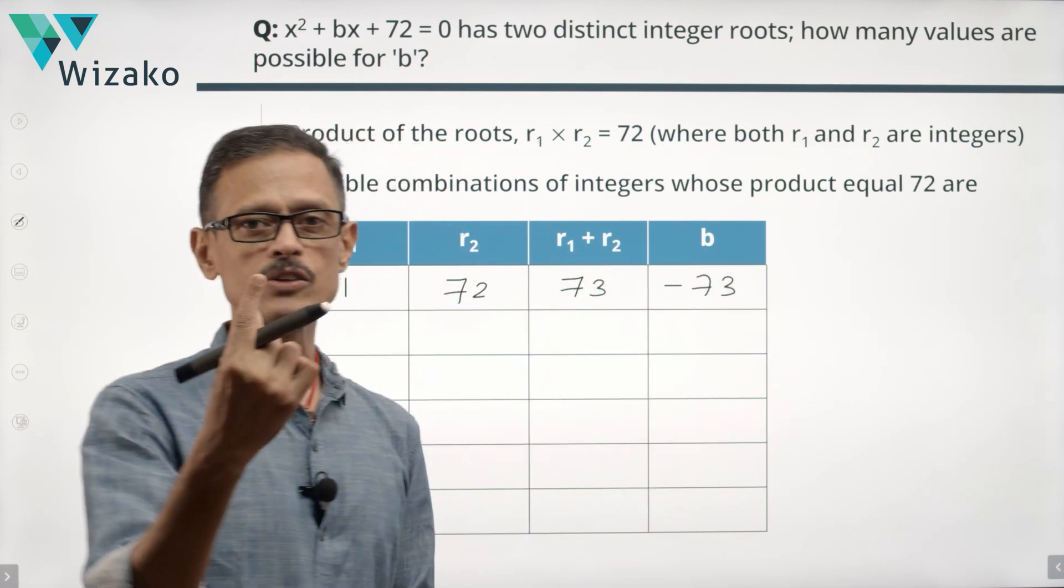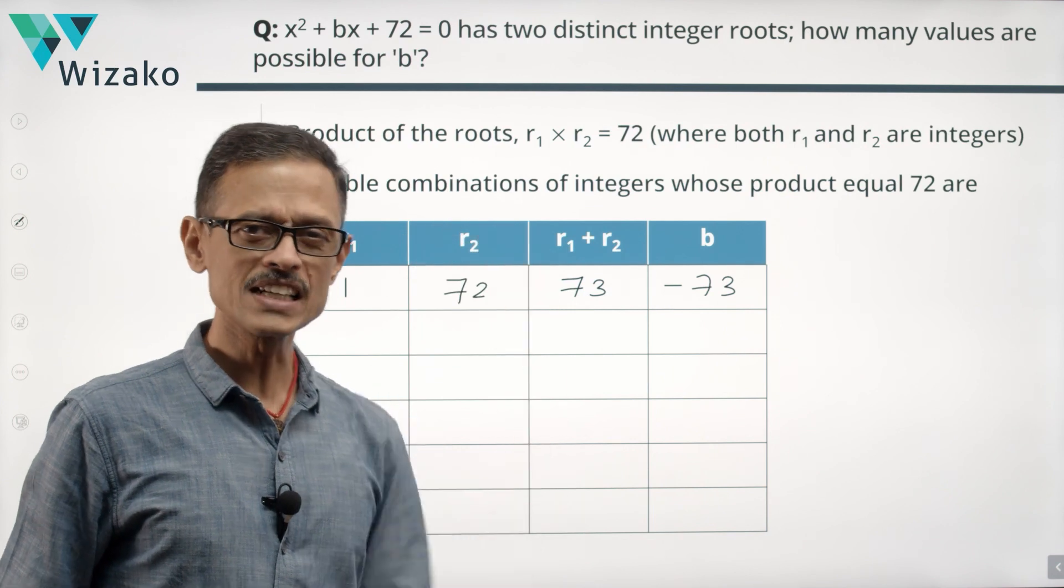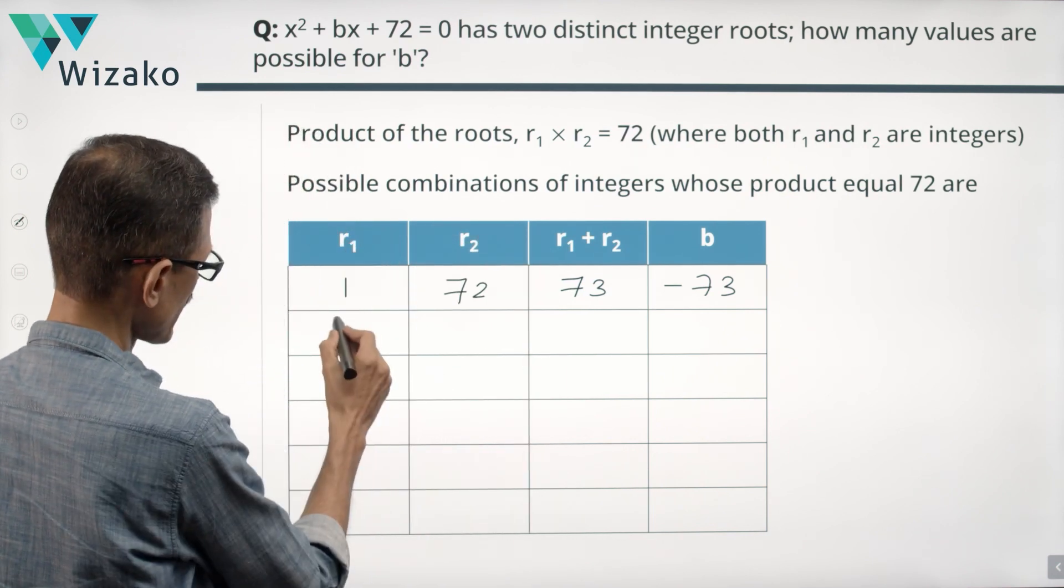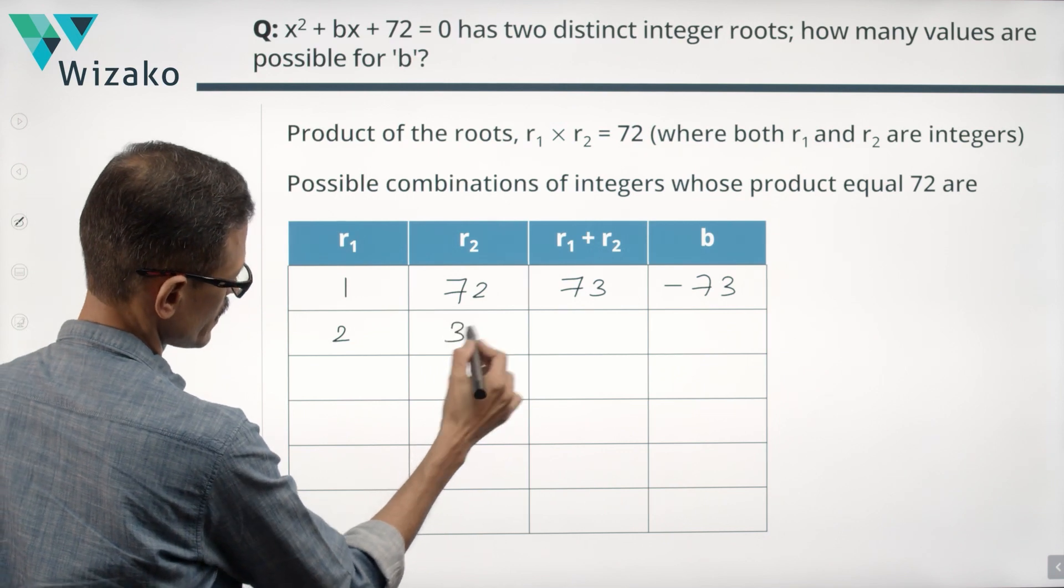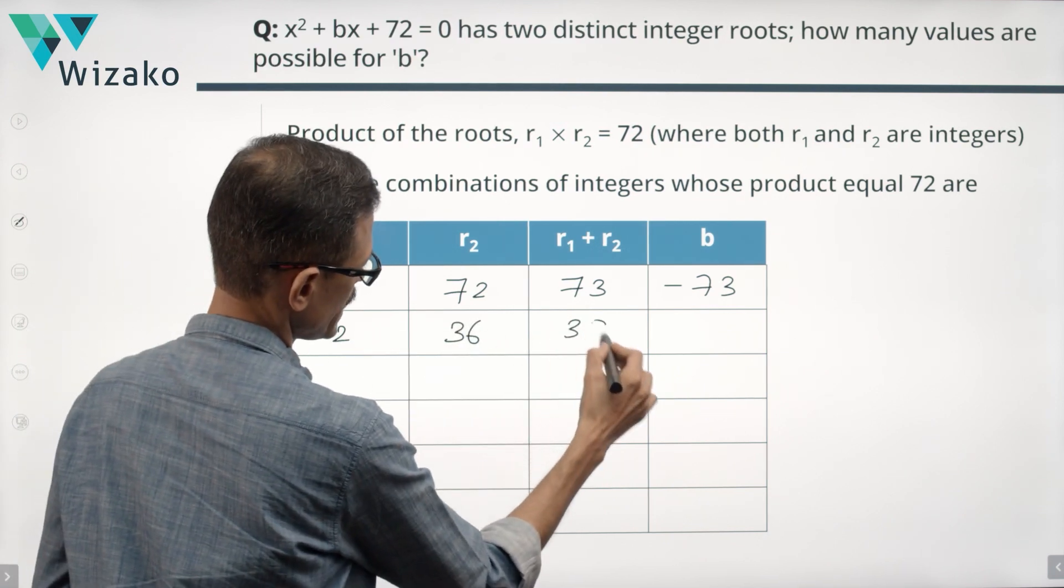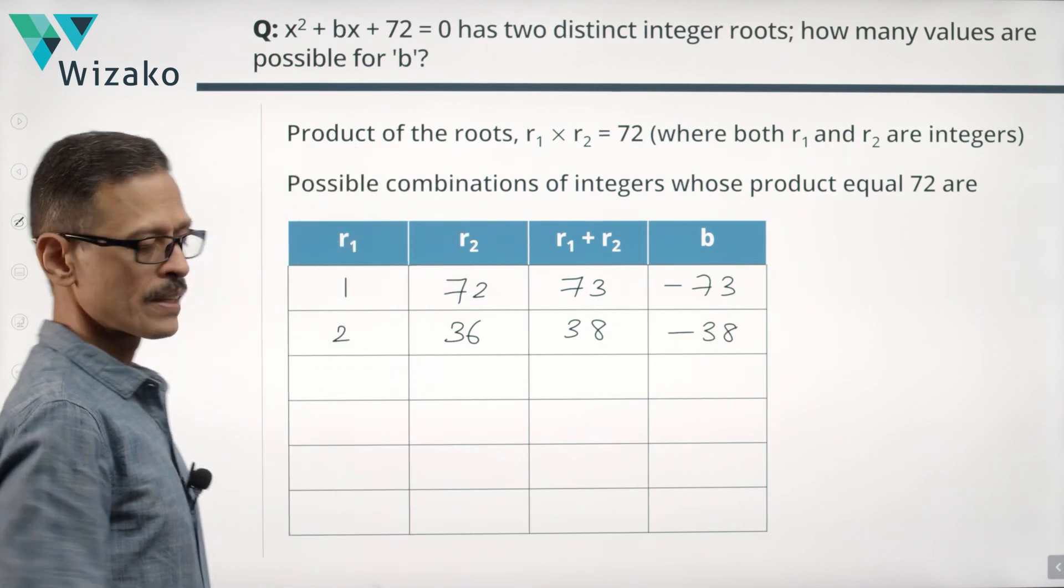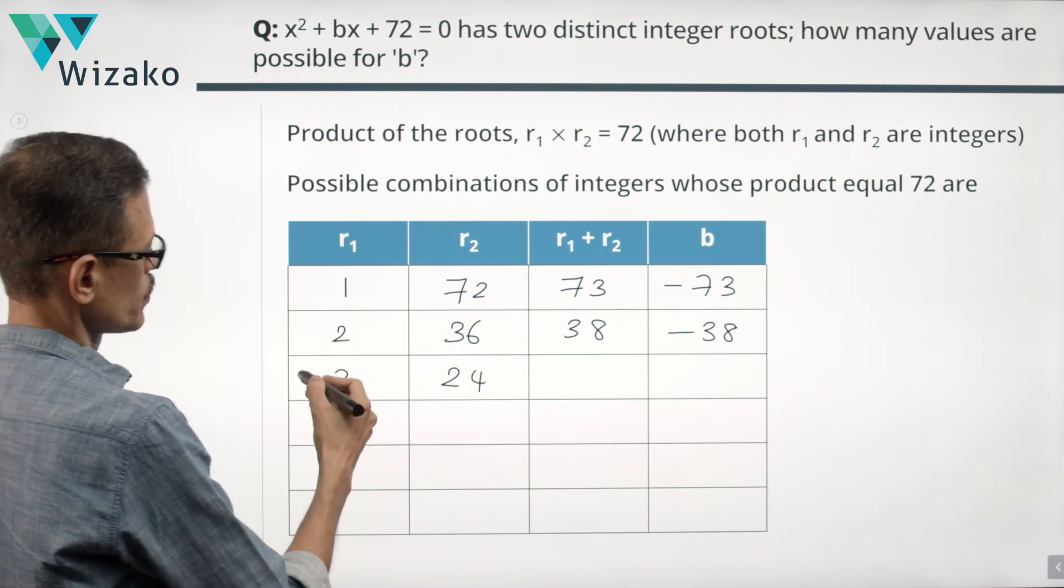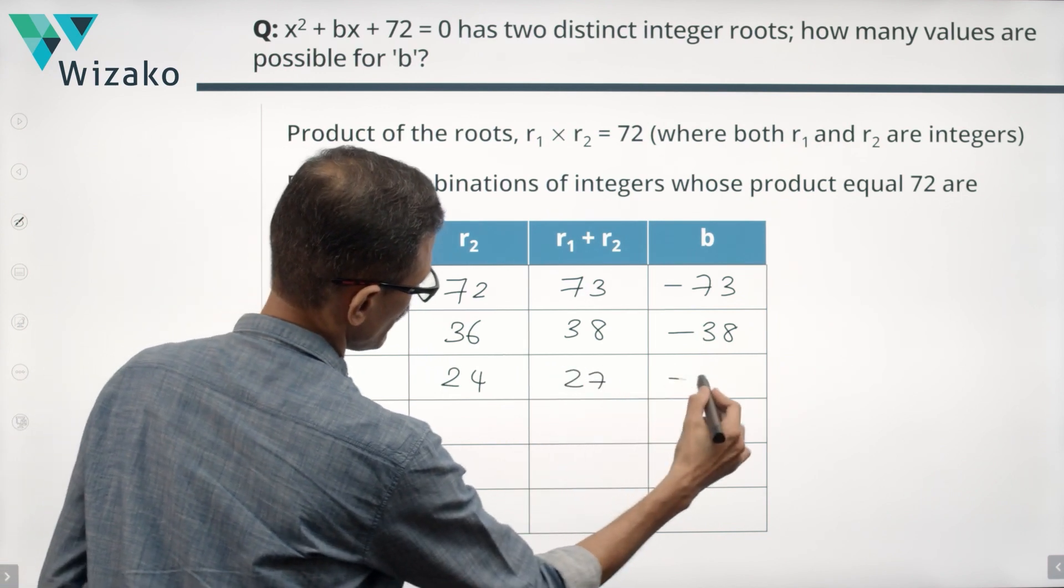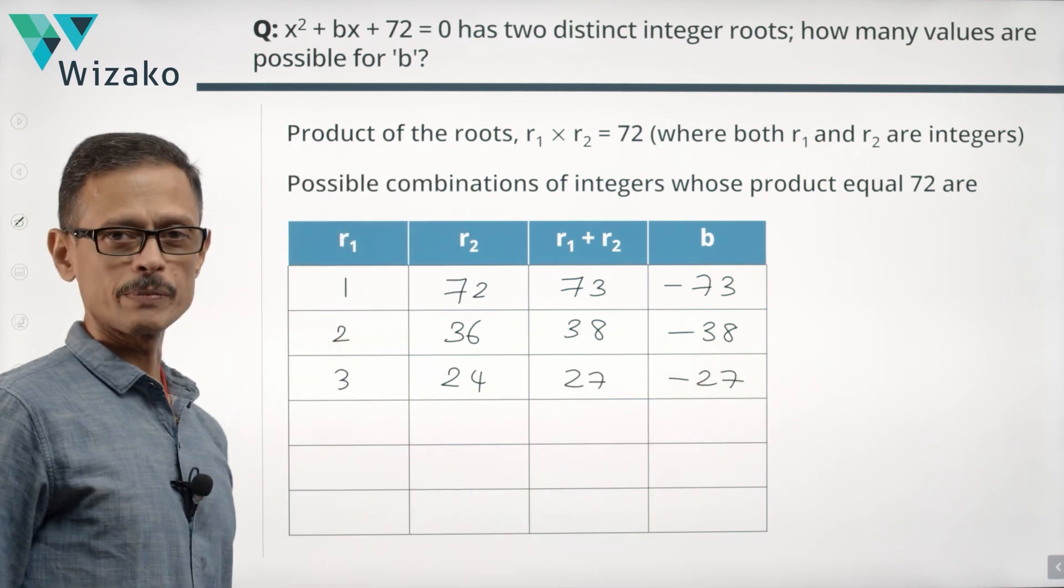Quickly list all possible values. 2 is a factor of 72. So R1 could be 2, which means correspondingly R2 will be 36. So sum is equal to 38. Possible value for B is minus 38. 3 is a factor of 72. Correspondingly it's going to be 24 for R2. So sum is equal to 27. Minus 27 is a possible value for B.